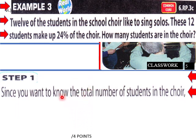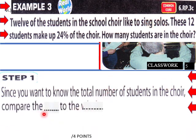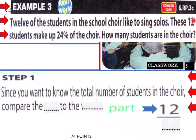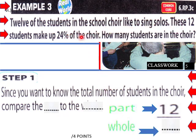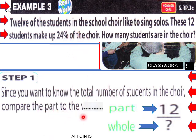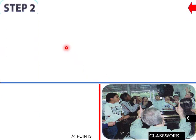These 12 students make up 24 percent of the choir. How many students are in the choir? Since we want to find the total number of students, we compare the part to the whole. The part is 12 — we know 12 students make up 24 percent of the choir — and the whole is what we're trying to find.